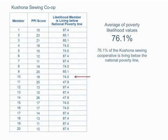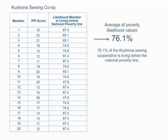What percentage of the Kushona Sewing Cooperative is living below the national poverty line? The sum of poverty likelihood values divided by 20, or the average likelihood value, is 76.1%. So, 76.1% of Kushona members are living below the poverty line.